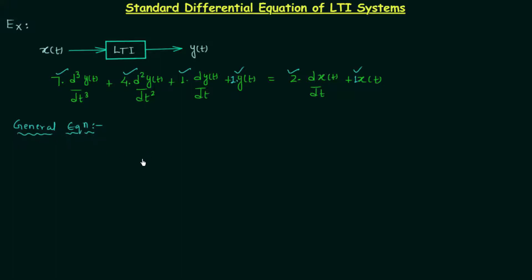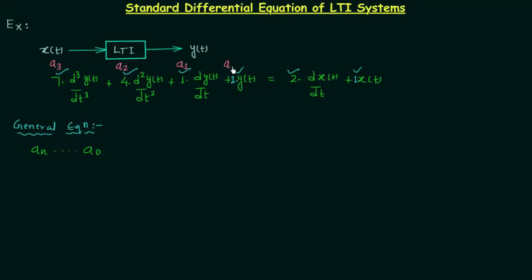In this general equation, first we will talk about the coefficients. I will use small letter 'a' for the coefficients on the left hand side. We will have the representation a_n to a_0. a_n is the nth coefficient. For example, in this case n equals 3, meaning differentiation is performed three times. So 7 is represented by a_3, 4 is represented by a_2, 1 is represented by a_1, and the last 1 (no differentiation) is represented by a_0.